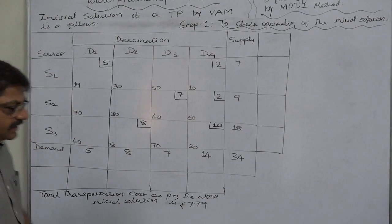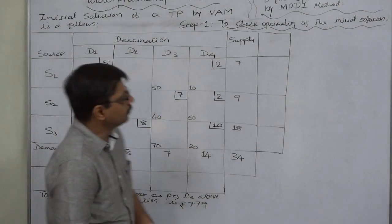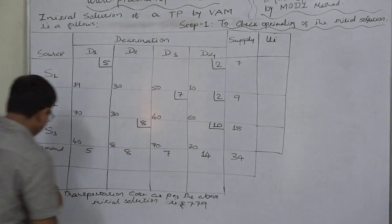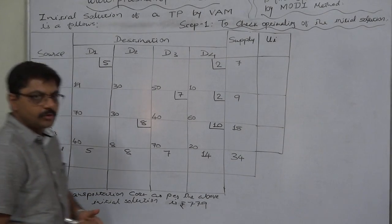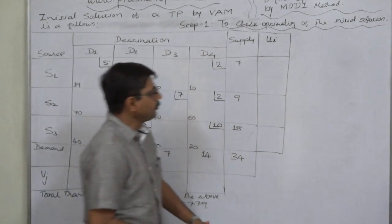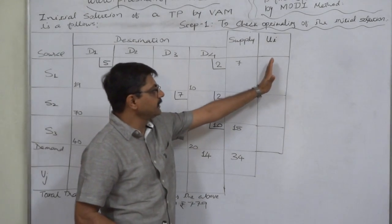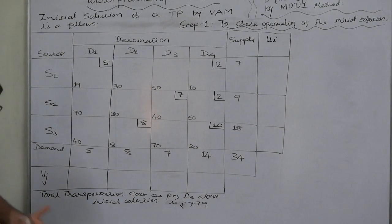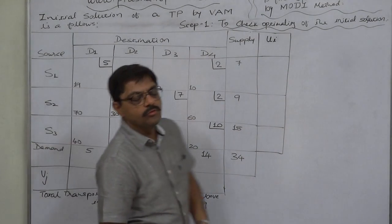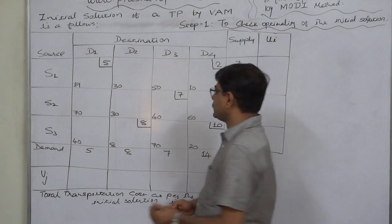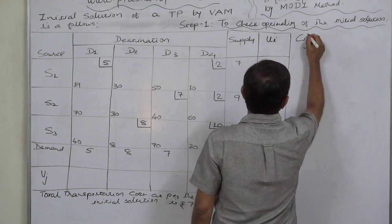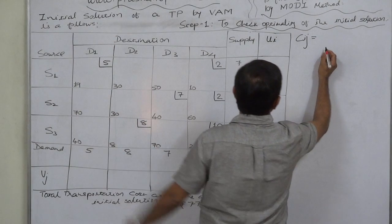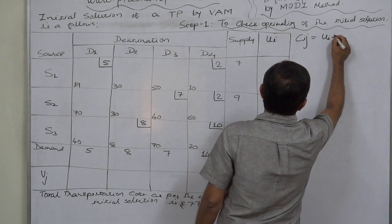To calculate Dij, first we have to write the dummy variables ui and vj. This is a very important part of the MODI method — to introduce and write dummy variables ui for all the rows and vj for all the columns. We use the relationship Cij, that is the cell cost, equals ui plus vj.